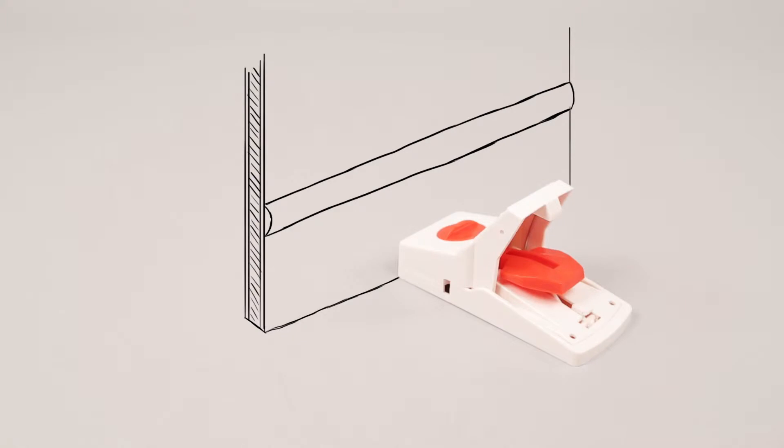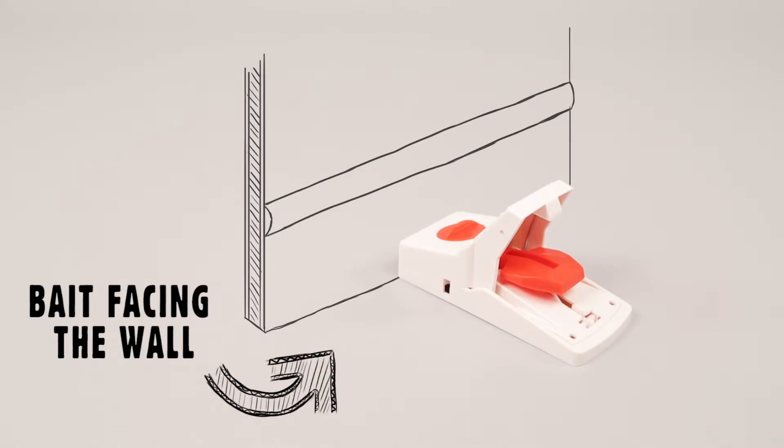Position the trap where rats have been active. Place at right angles to the wall with the bait pedal facing the wall.